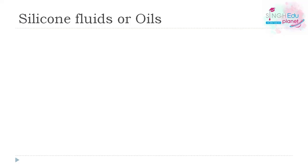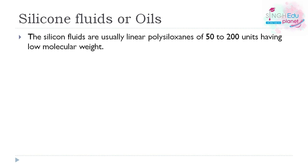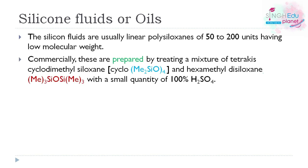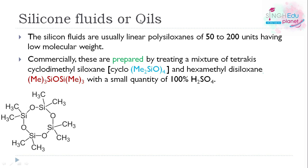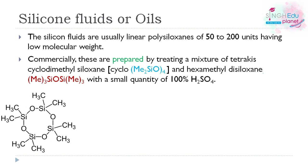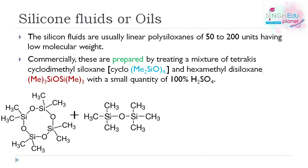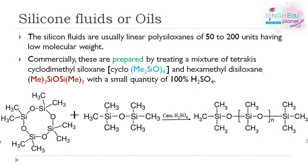The first topic is silicon fluids or oils. These are usually low molecular weight linear polysiloxanes having 50 to 200 units. These are prepared by treating a mixture of tetrakis cyclo-dimethylsiloxane and hexamethyldisiloxane with a small quantity of 100% sulfuric acid. Mixing all three gives us a silicon oil.